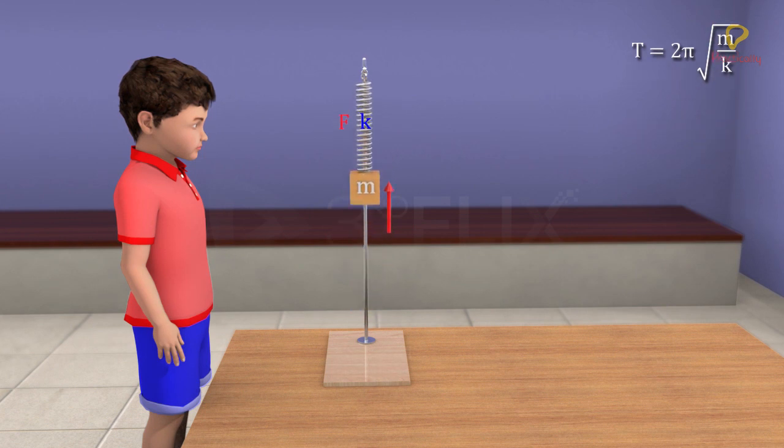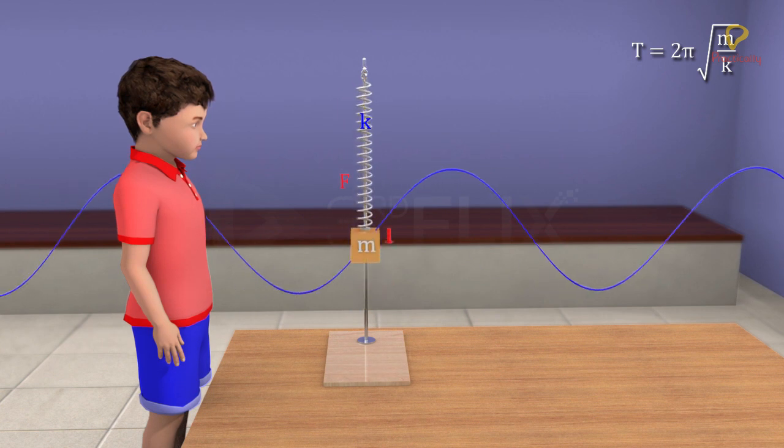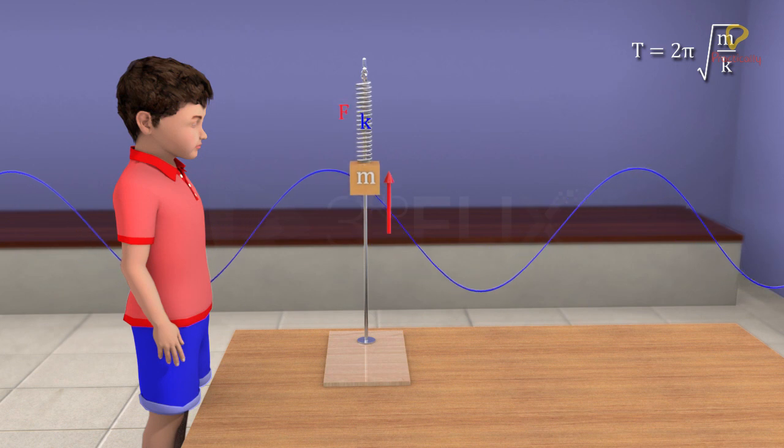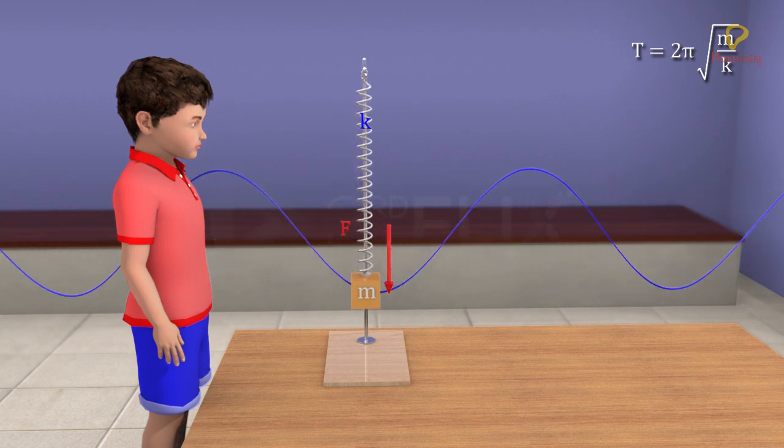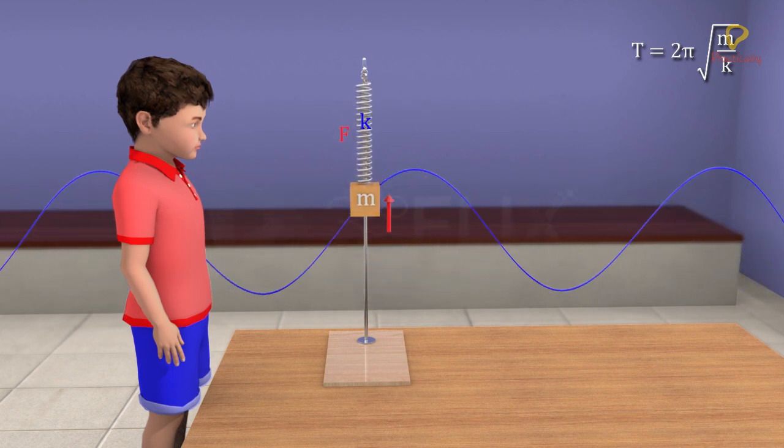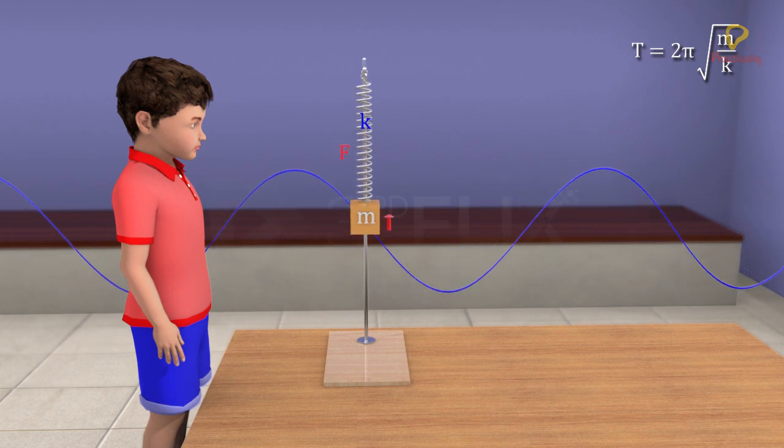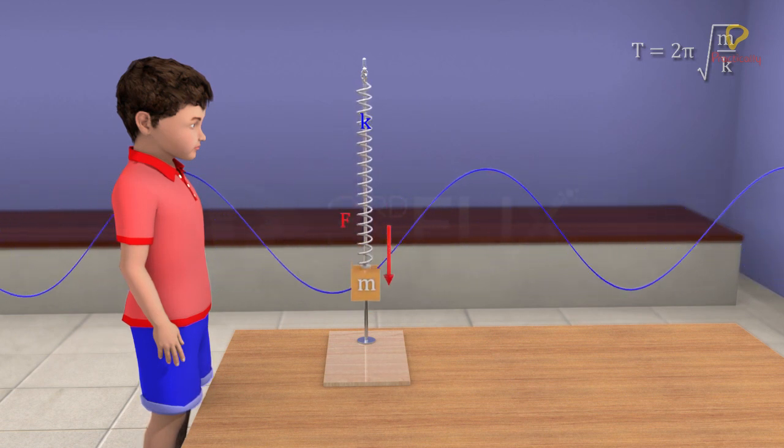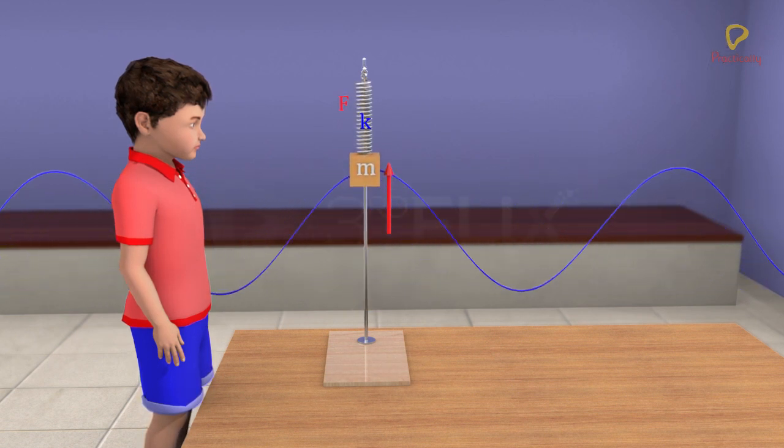Omega and t came out to be same in both cases. Both the oscillations are similar in every sense. Only the mean position about which the block executes SHM has changed in the second case.